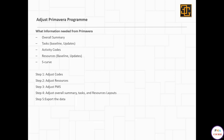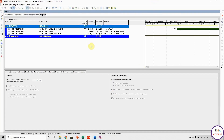So what information is needed from Primavera? I take the overall summary, the task tables from either the baseline or the update, the activity codes, the resources from either the baseline or the update, and the S-curve. There are five steps to finalize this database: first adjust the codes, then adjust the resources, then adjust the PMS (progress measurement system), and finally export all the data to Excel.